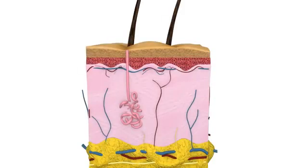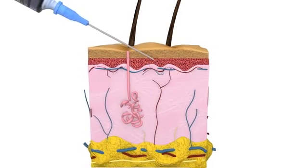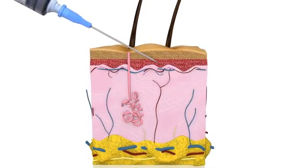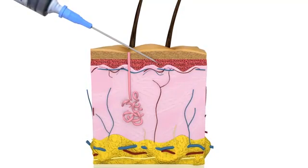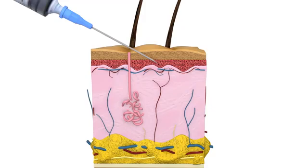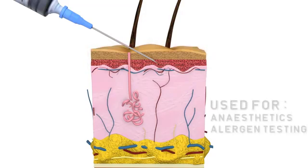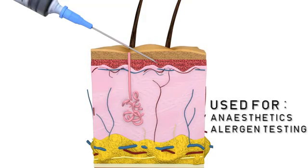The intradermal route is where medication is injected just below the top layer of the skin, the epidermis. As the injection site is not near any major muscles or blood vessels, the action of the medication is limited to the area of the injection site and is therefore primarily used for anaesthetics or allergy testing.